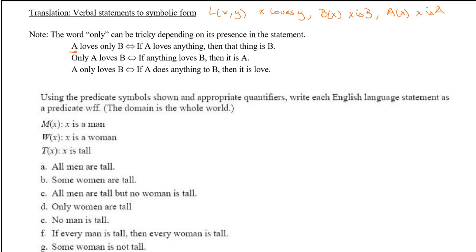When we say 'A loves only B,' meaning if A loves anything then that thing is B, we translate it as: for all x, if A(x), then for any y, L(x,y) implies B(y). So the quantifier 'for all' scopes over the implication that whatever is loved must be B.